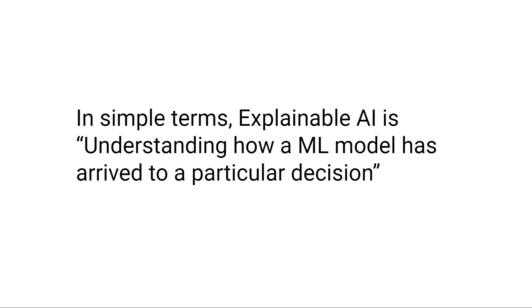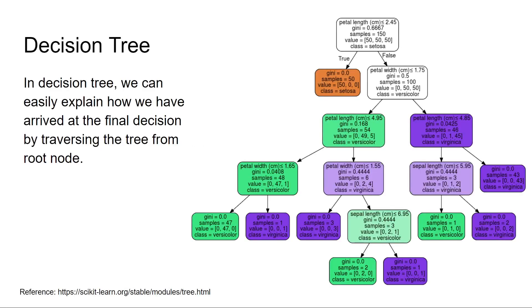Let's see what Explainable AI looks like. On the right side, you can see the decision tree on the Iris dataset. In the Iris dataset, you have four features: petal length, petal width, sepal length, and sepal width. You have three output classes: Setosa, Versicolor, and Virginica. This decision tree is generated using the Iris dataset.